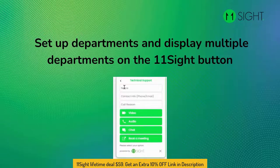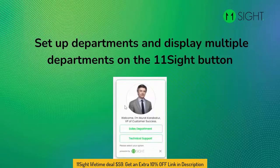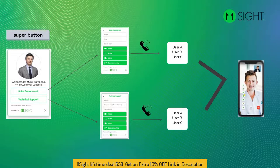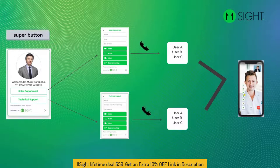By using Call Forwarding, you can create departments for your organization, and multiple users receive the calls at the same time. It looks like a direct line button to the end user. The caller first chooses the department, then the call type.